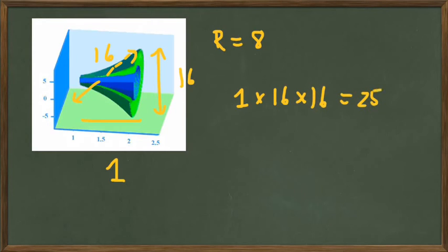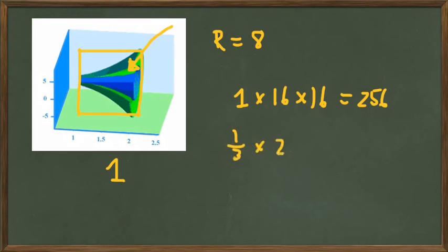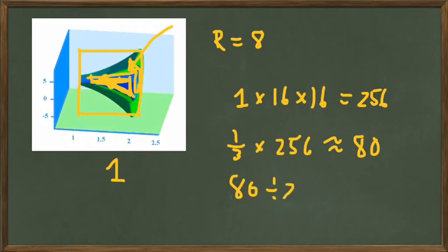So it is 1 by 16 by 16, or 256 cubic units. But you can see that the entire figure is roughly one-third of that. So one-third of 256 is approximately 80. And then we are taking out this dark blue shaded region, which is about half of the volume being removed. So about 80 divided by 2, we should get some number around 40.